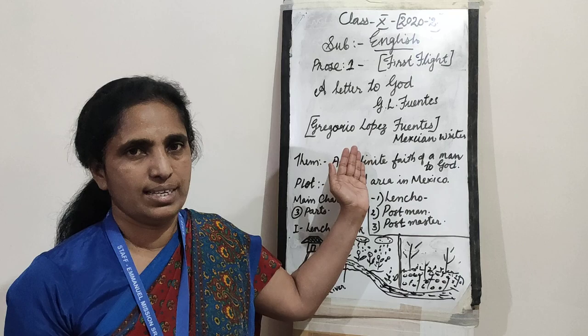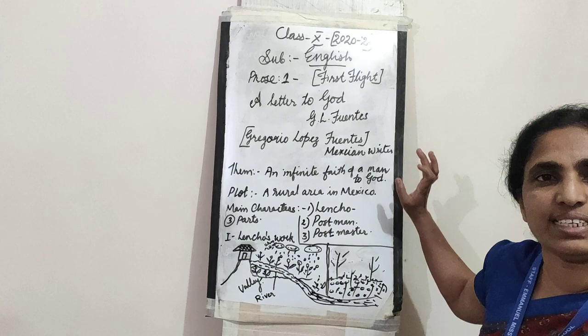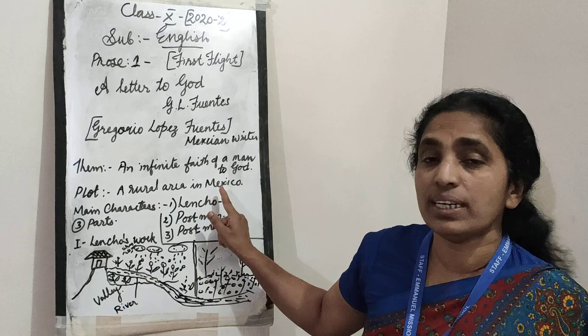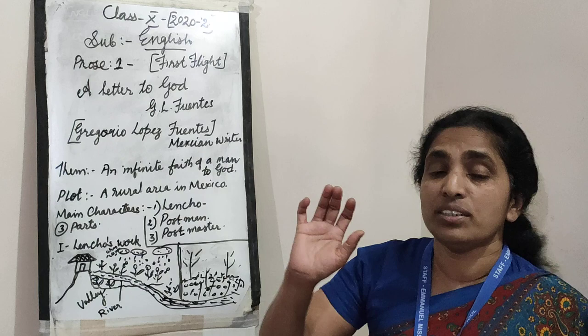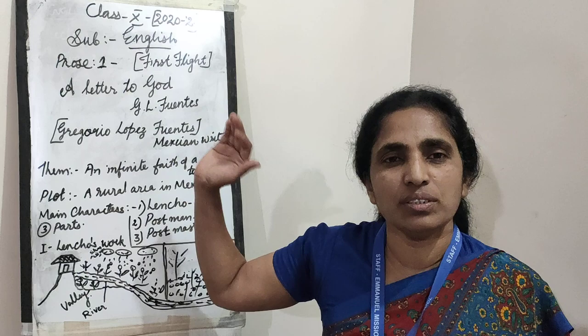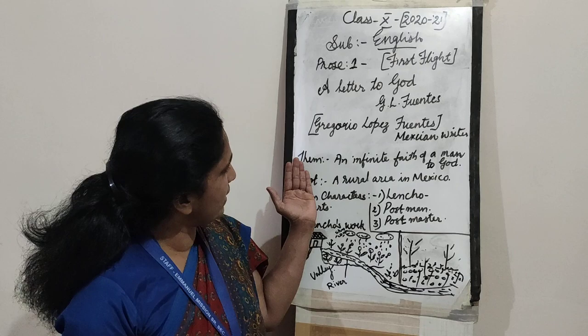Now, what is the theme of 'Letter to God'? Here, an infinite faith of a man in God is explained. The plot is set in a rural area in Mexico. The name of the story is 'A Letter to God' — is it possible to send a letter to God? No, it is not possible because there must be an address. But here there is no address for God. However, the writer created it as a real letter — that is the ability of the writer. This letter to God includes three divisions.